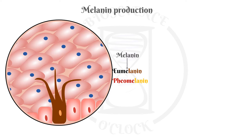Melanocytes synthesize melanin in organelles called melanosomes, which resemble small sacs. Depending on the type of melanin that is synthesized, the melanosomes are either eumelanosomes or pheomelanosomes.